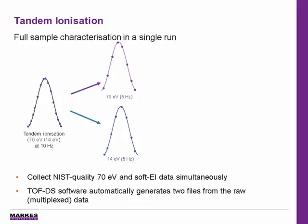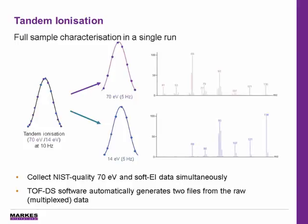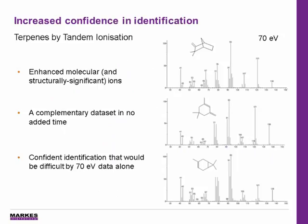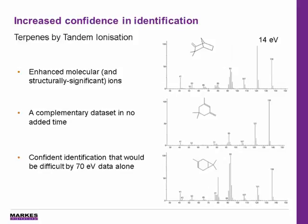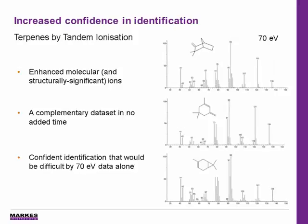Reference quality 70 eV spectra can be screened against commercial or in-house libraries, while soft EI with improved molecular ions and reduced fragmentation gives enhanced confidence in compound identification. This is especially true for isomers. Soft EI retains a degree of fragmentation, unlike other soft ionization techniques, meaning that the molecular ion and other structurally significant ions are enhanced, which can help to identify individual isomers, like the terpenes shown here.